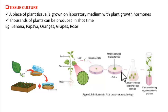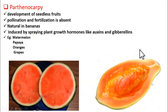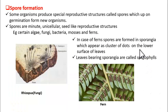The ability of plant tissues to develop into new plants is called totipotency. Just remember the term totipotency. I hope you understood tissue culture, parthenogenesis, and spore formation in this session. Thank you, students.